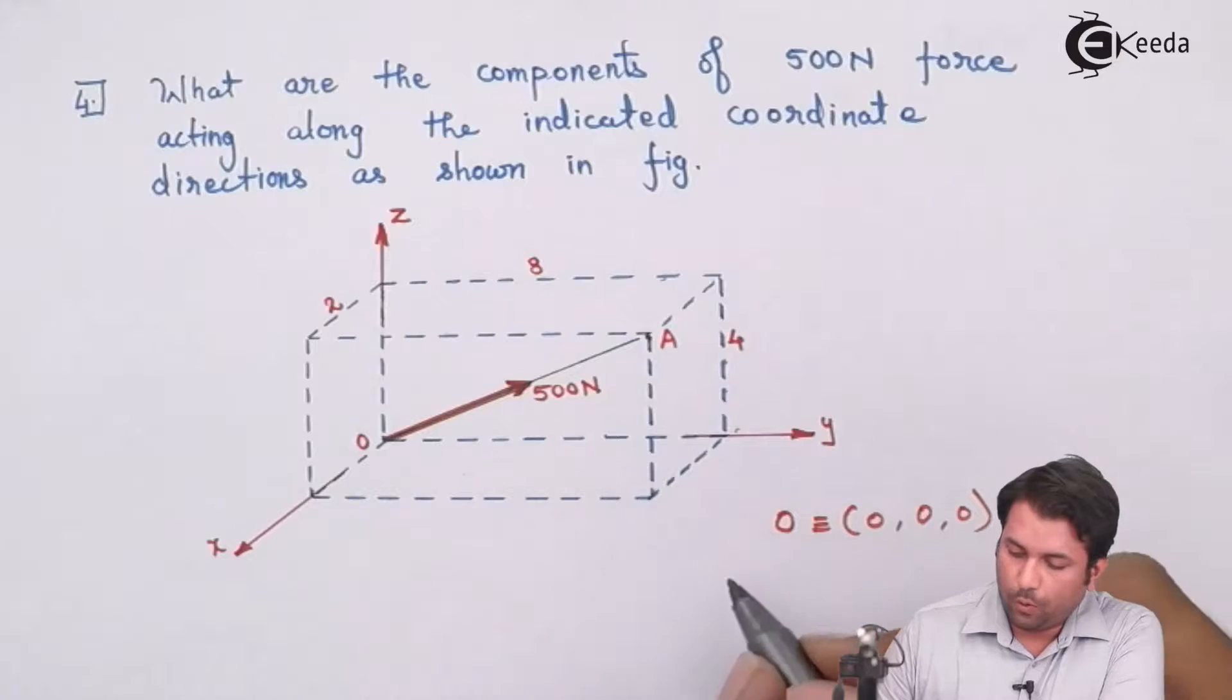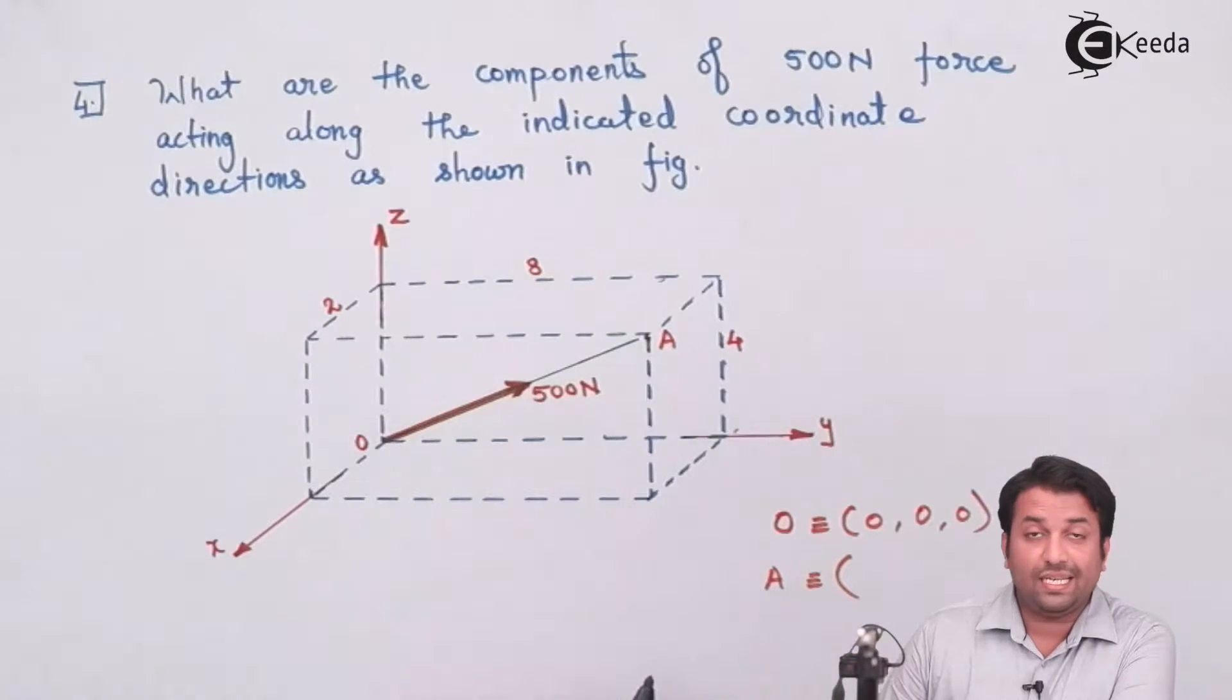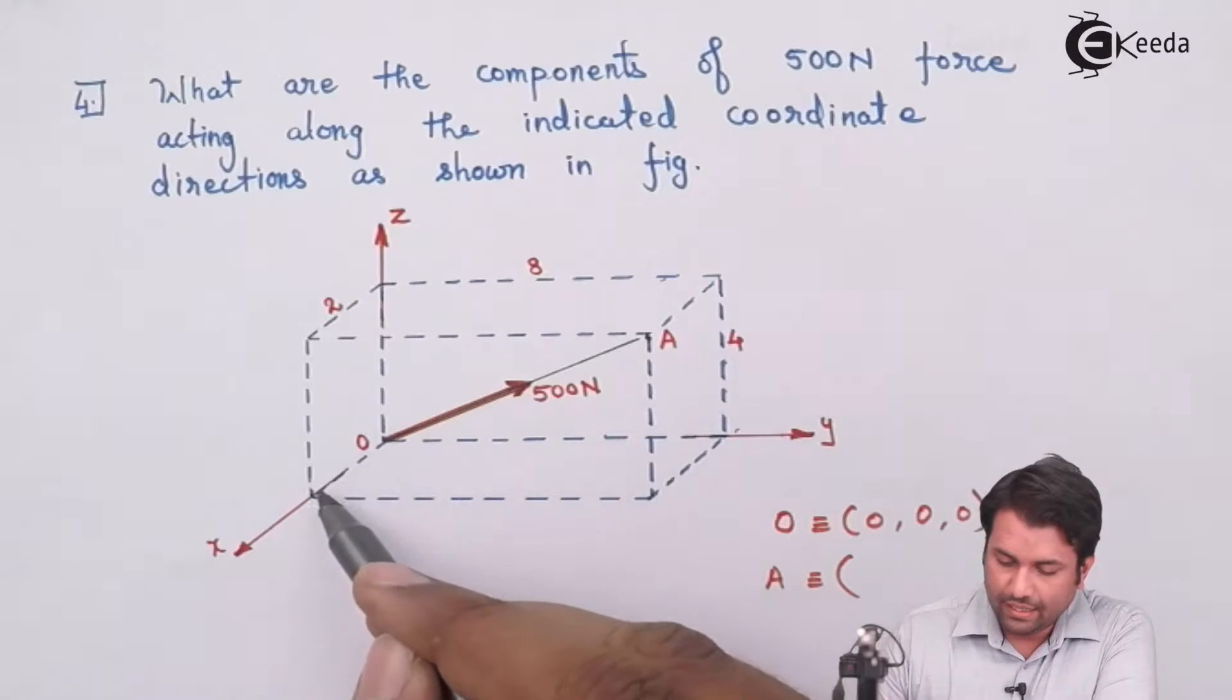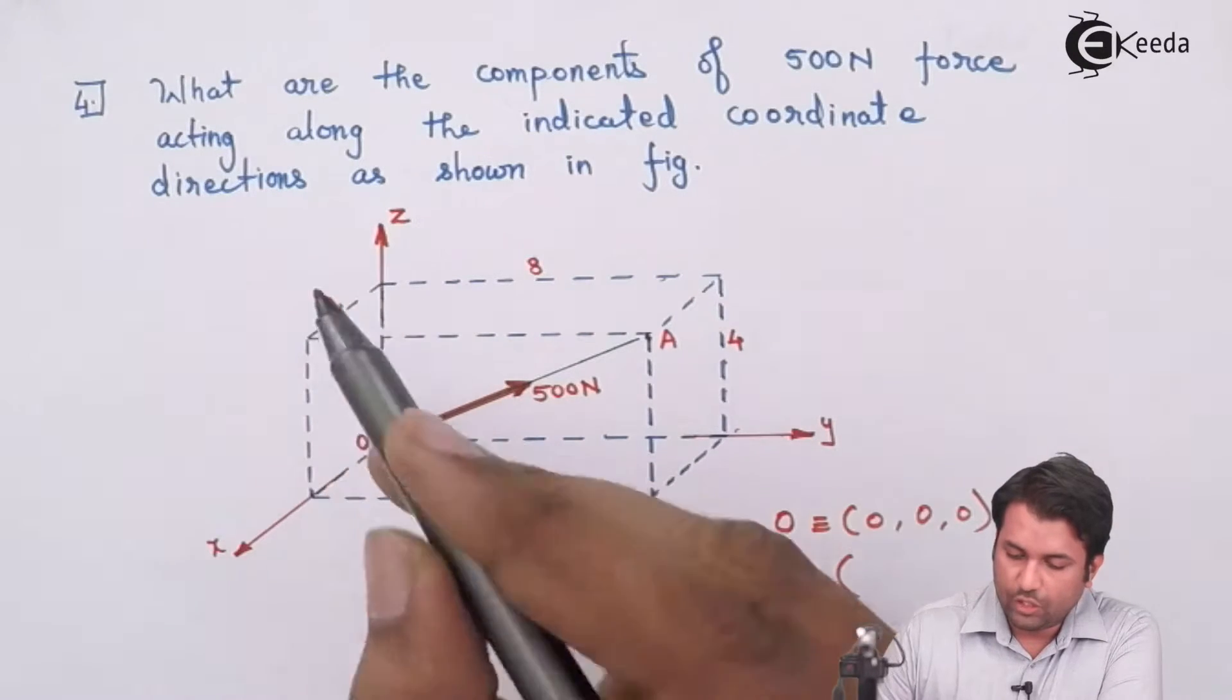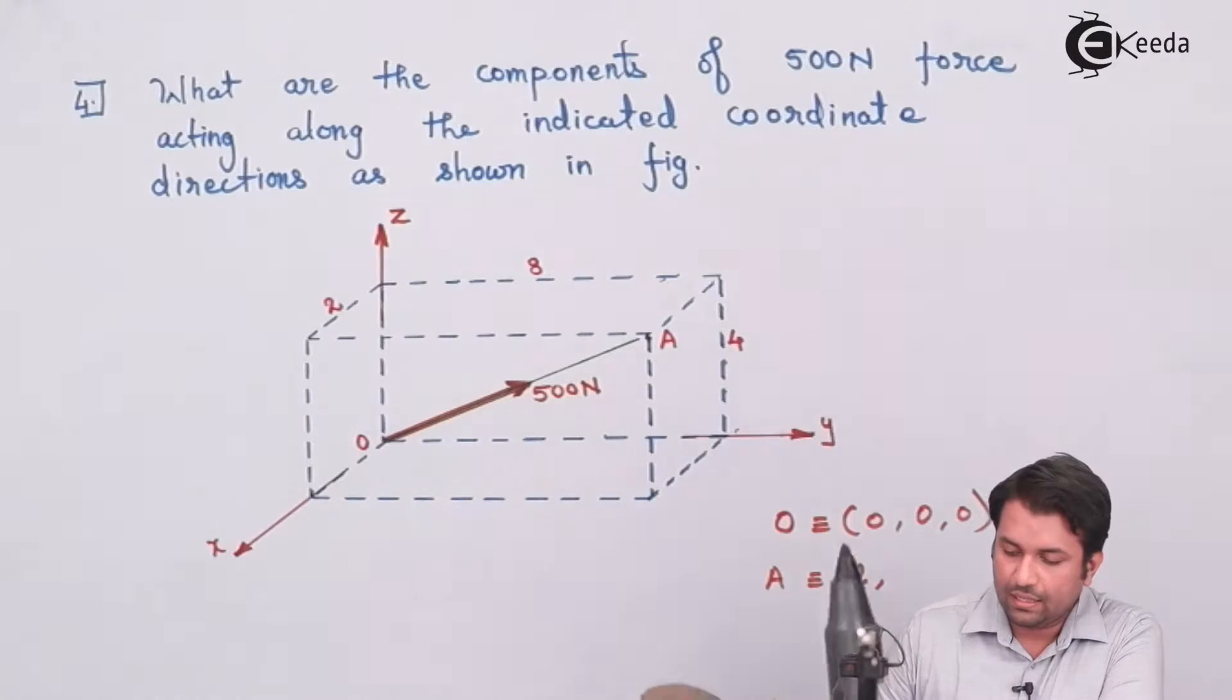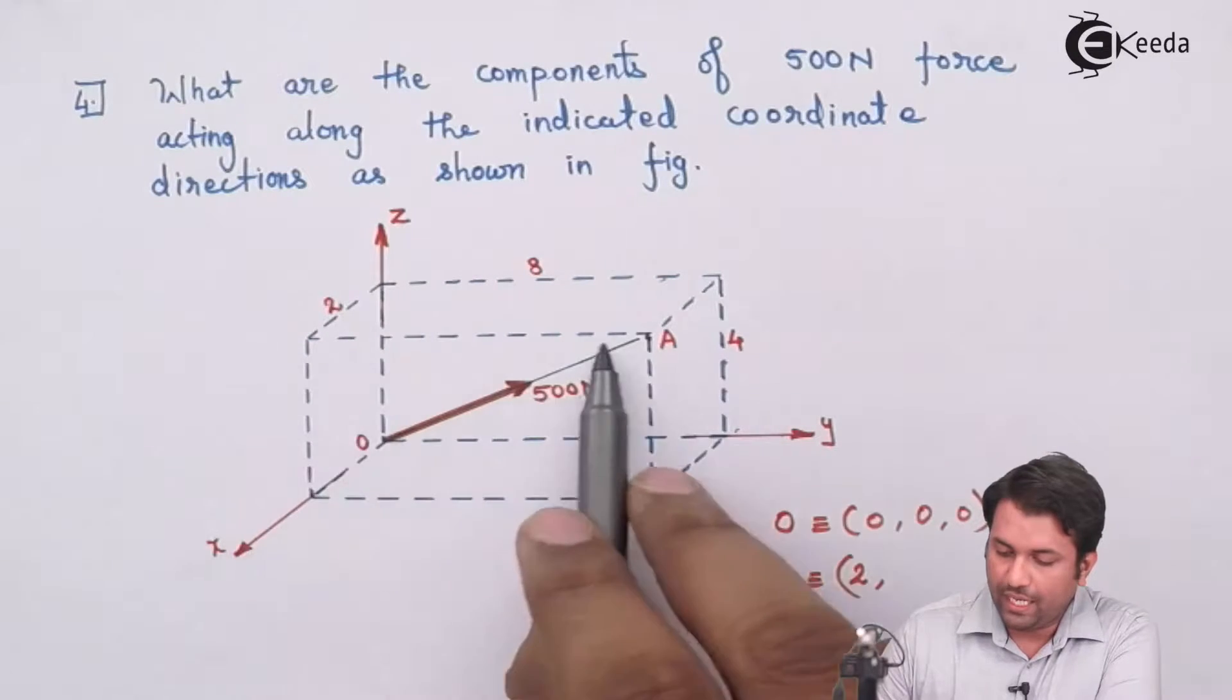The coordinates for point A will be the distance along X axis first. So this is my X axis, the distance along this line is given to me over here, that is 2 units, then comes the Y axis.